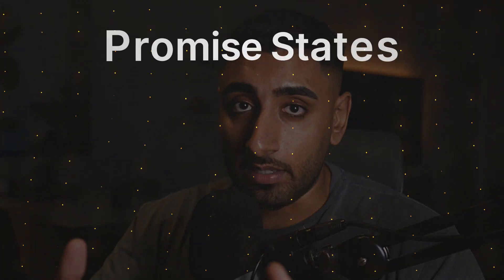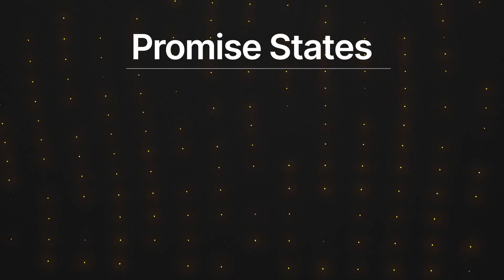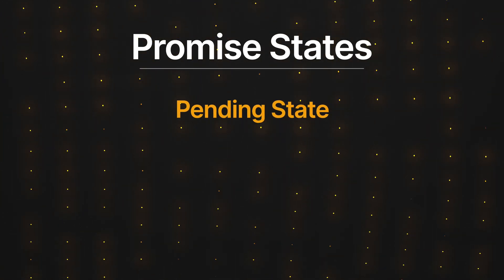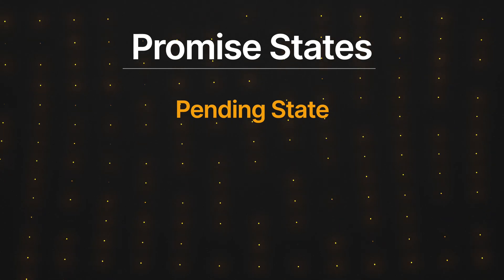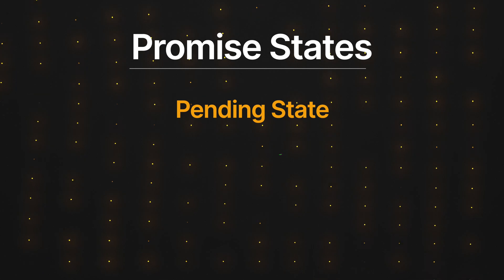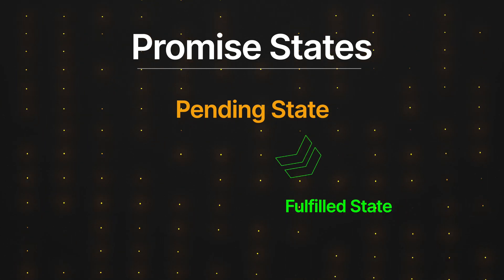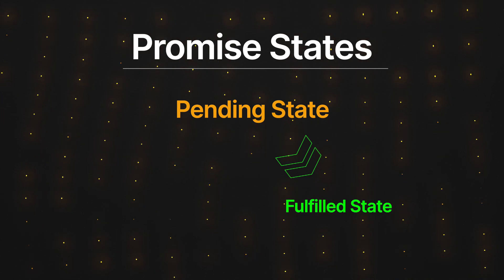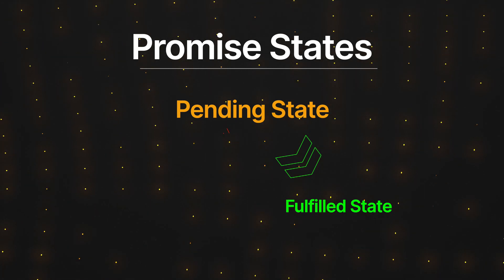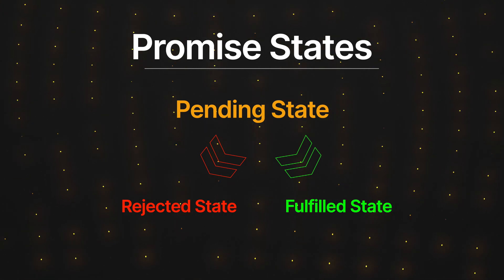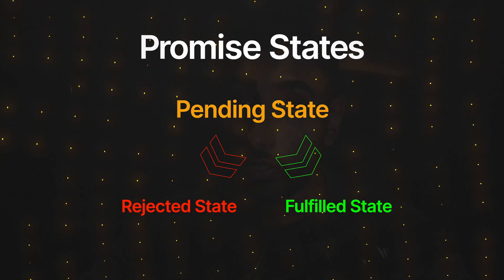There can be three potential states a promise can be in. The first and initial state that a promise is always in is the pending state. Every single promise starts off in the pending state. It can then go into either the fulfilled state, if the asynchronous action was successfully completed, or the rejected state if an error occurred and the asynchronous operation was not able to complete successfully.